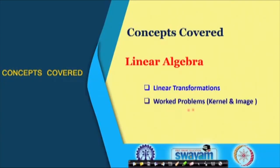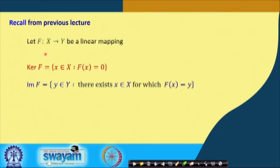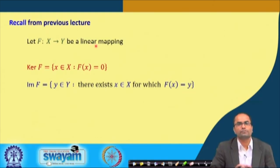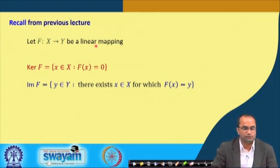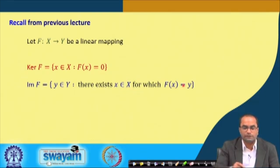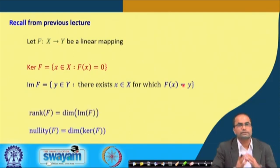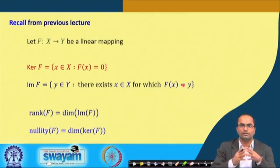Today we will see some worked problems where we will find out the kernel and the image and their dimensions. To recall from the previous lecture: the kernel of f is defined as the vectors from X whose map is 0 in vector space Y, and the image is all the elements of Y for which there exists an x in X such that f(x) equals y.